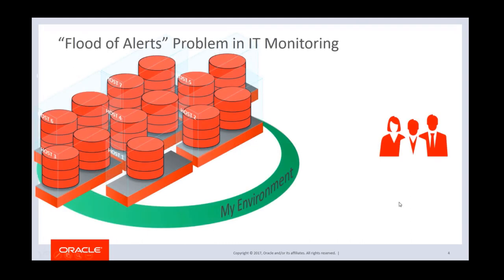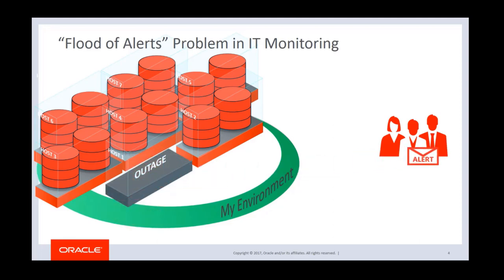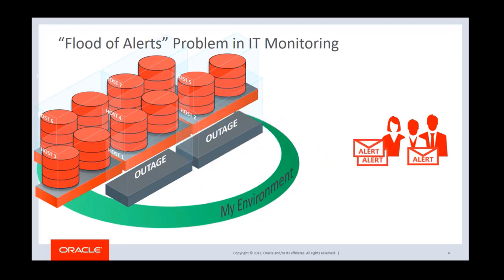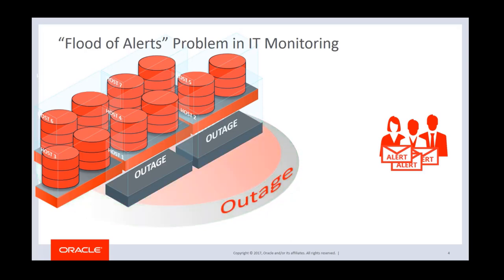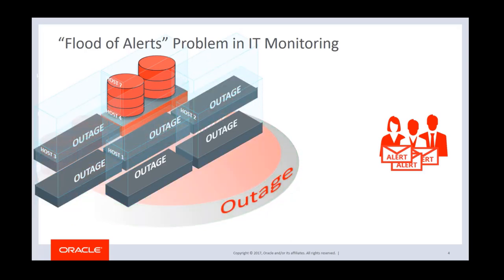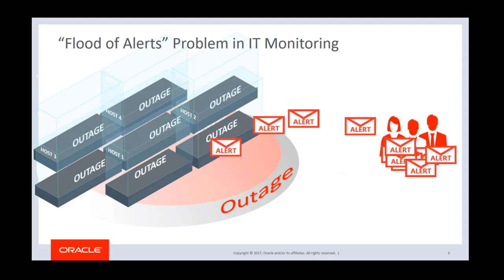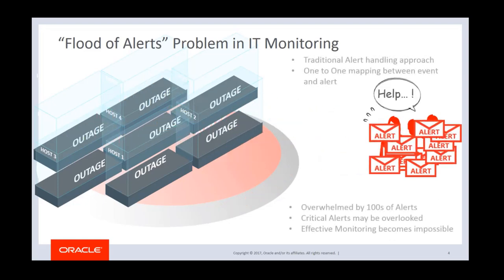In traditional IT monitoring, where there is a one-to-one mapping between event and alert, when one of your targets goes down, you get one alert. Then what happens when two of your targets go down because the host went down? You get two alerts. Then what if there is a site-wide outage and all of your targets go down? You get one alert from each monitored entity, although they went down with the same reason.